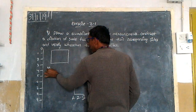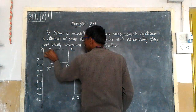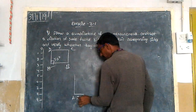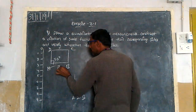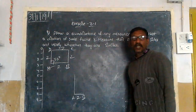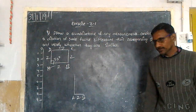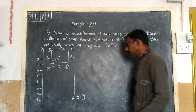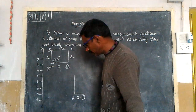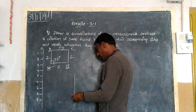This is my square A, B, C, D. AB is two units. This is also two units, this is also two units. In a square all sides are equal and each angle is 90 degrees. This side is two units, this side is two units.